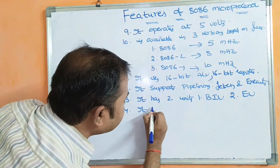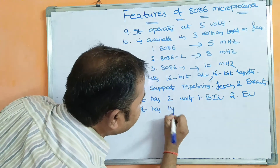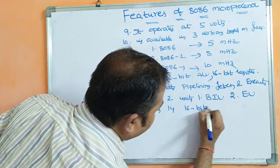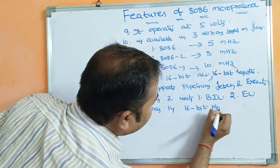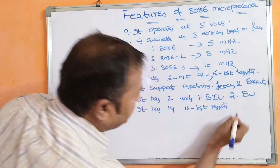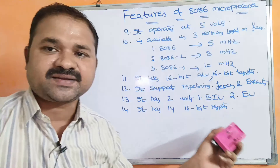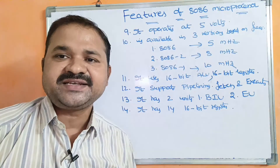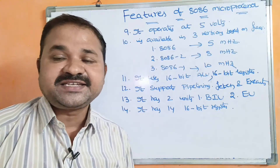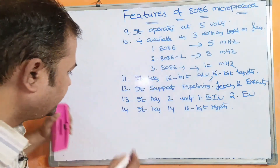The 8086 has 14 sixteen-bit registers. So there are 14 registers in total, each with a capacity of 16 bits.